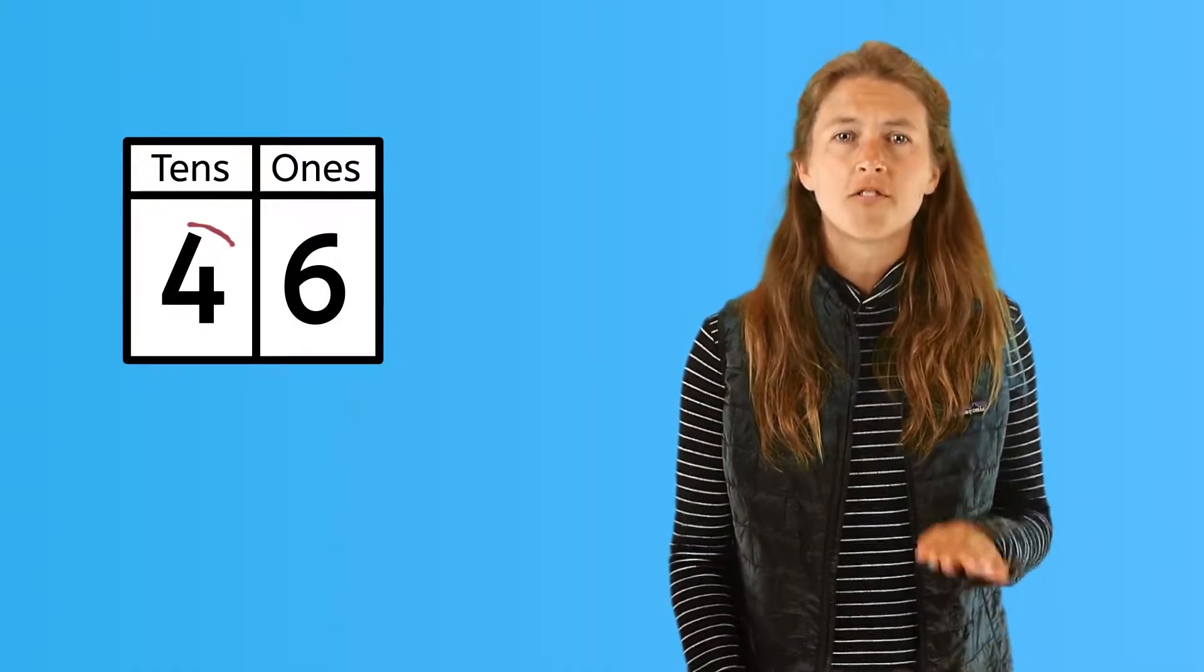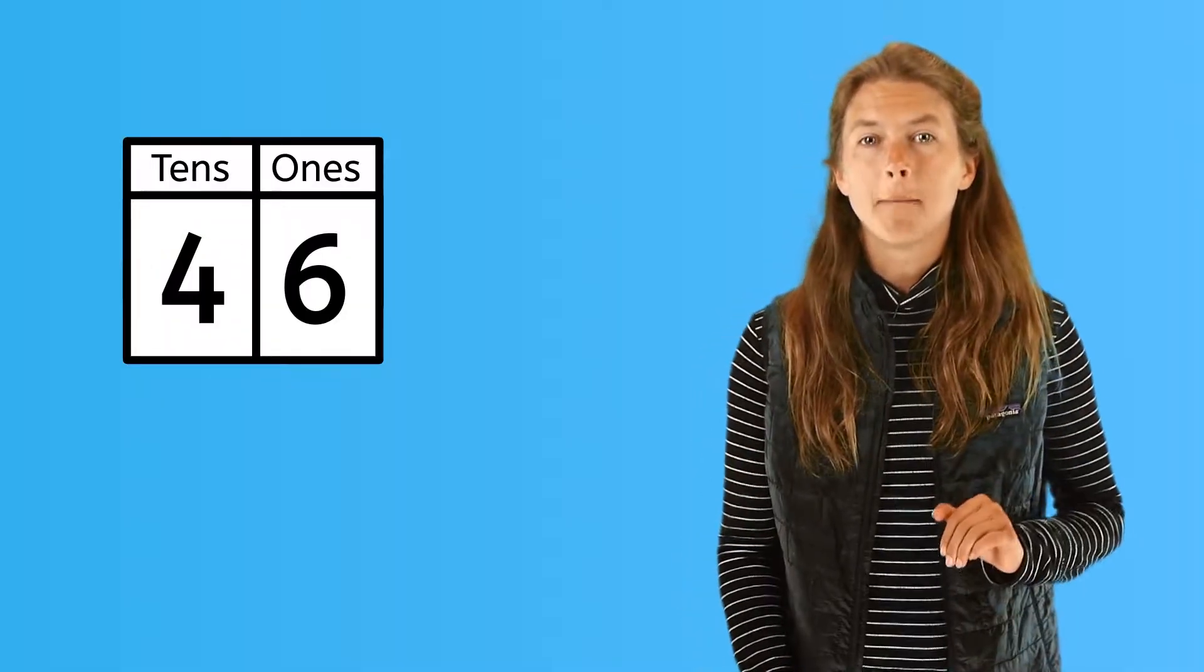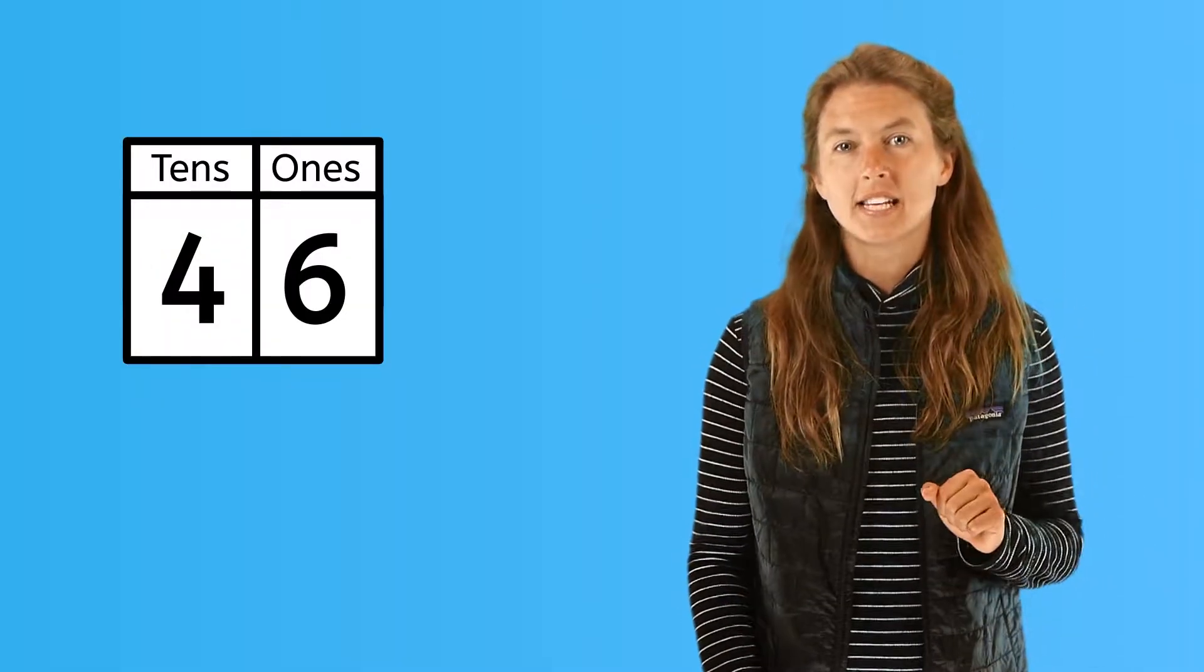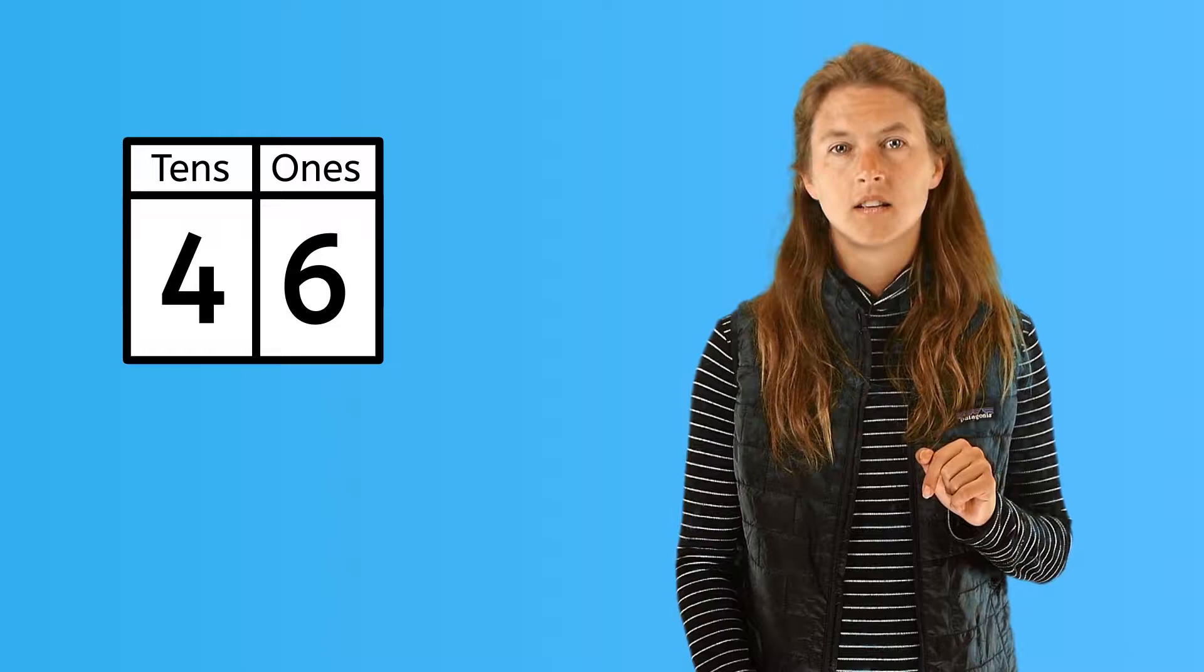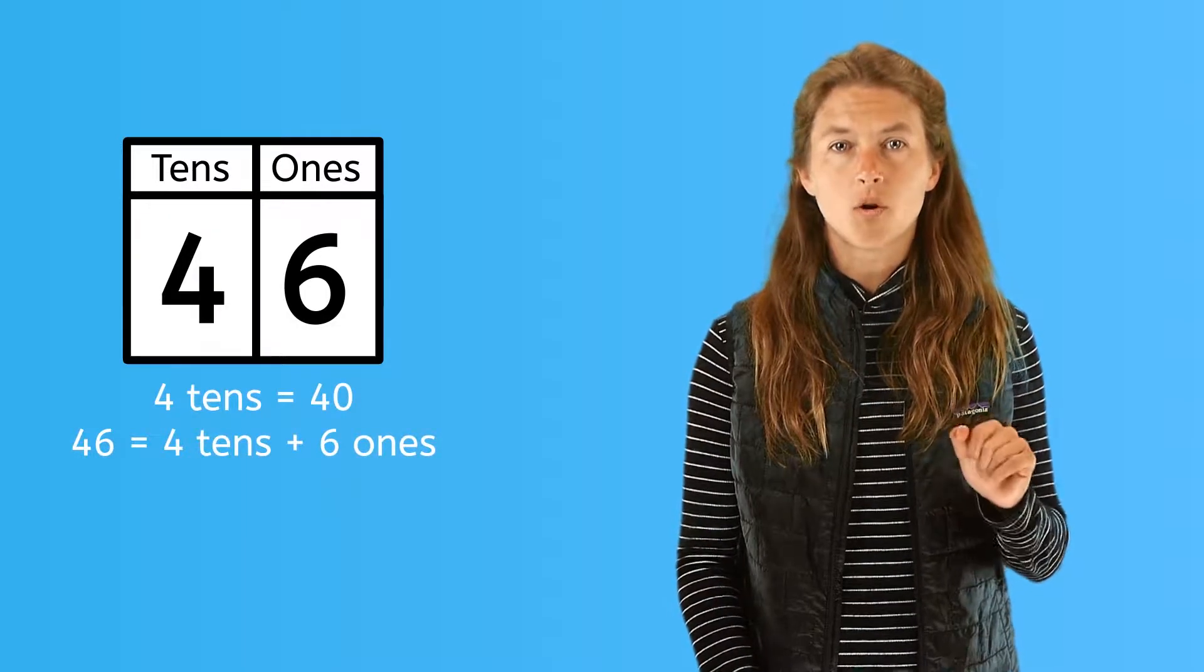So, let's take a look at number 46. Do you remember which is the tens and which is the ones? Correct! The six is in the ones place and the four is in the tens place. The four really is worth 40 because it is in the tens place standing for four tens. Four tens equals 40.